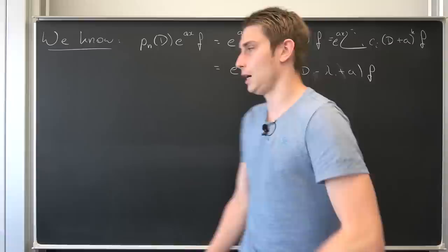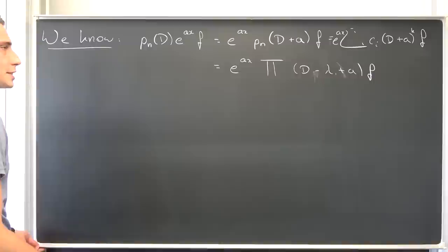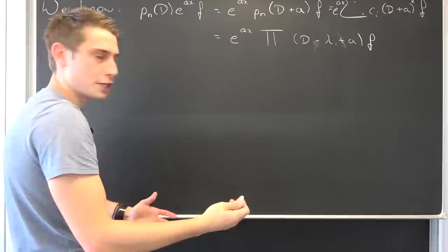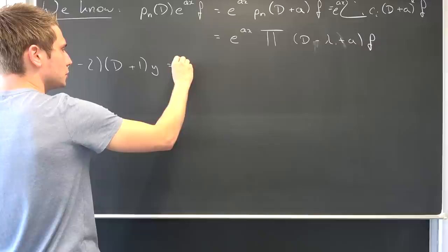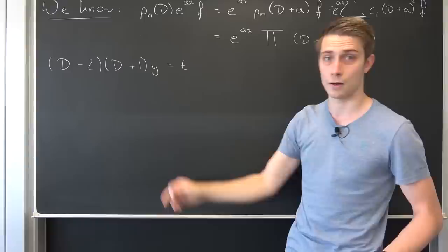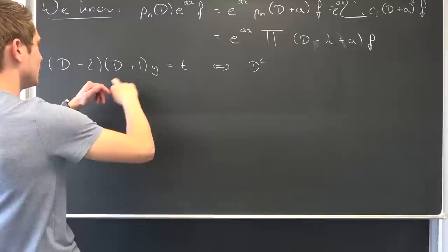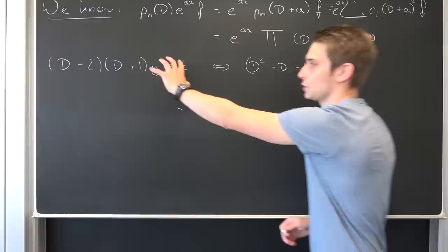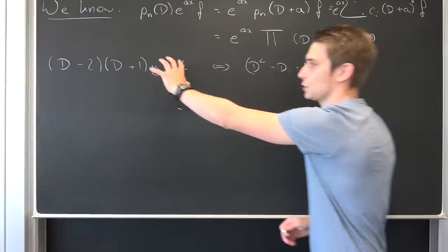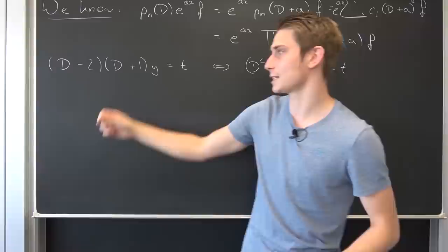Now let us go ahead and get started. I'm going to think of a simple differential equation. Let's work around with the signs a bit. Suppose we had the differential equation expressed in its linear factors: (d minus 2)(d plus 1) times y equals t. If you were to factor this out you would end up with d double prime minus d minus 2, times y equals t. This is what we have, and this right here is extremely powerful.